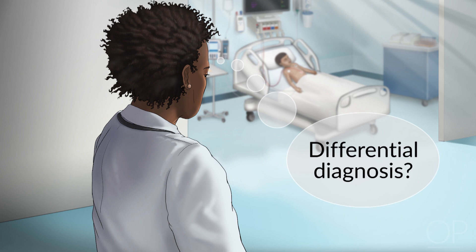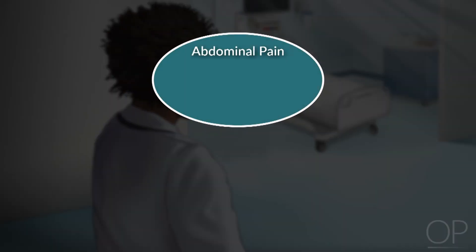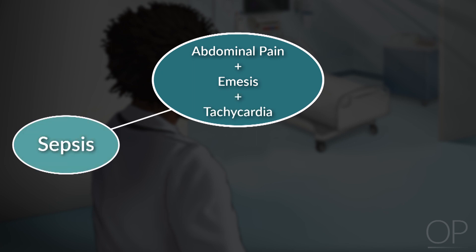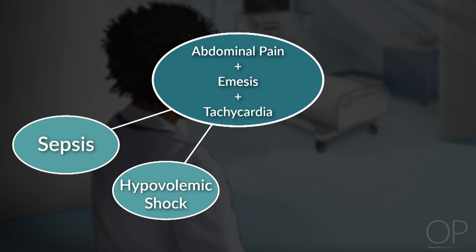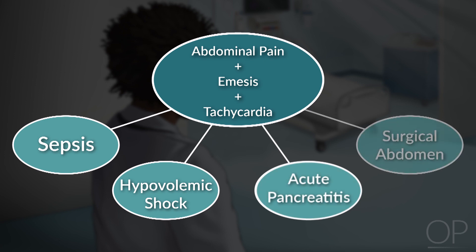While the differential of abdominal pain is broad, in the context of pain, emesis, and tachycardia, you should be thinking about sepsis, hypovolemic shock, acute pancreatitis, and a surgical abdomen. Of note, acute pancreatitis often presents acutely, but you can also have a gradual and variable presentation.